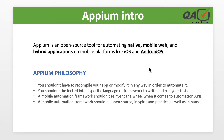Appium came up with an idea with some philosophies. The first philosophy says that you shouldn't have to recompile your app or modify it in any way in order to automate it. When automating a browser application with Selenium, we need not do anything with respect to the application itself. For example, when automating google.com, we just launch the browser and start automating.